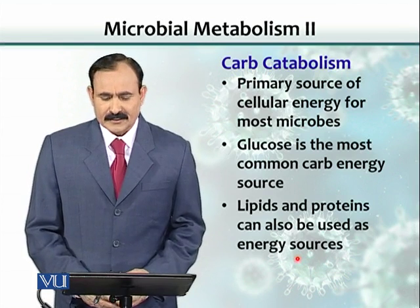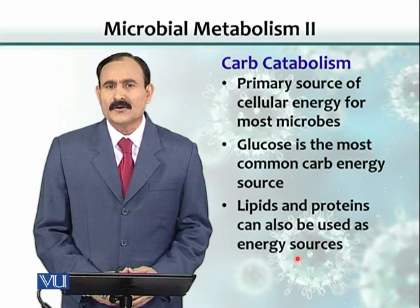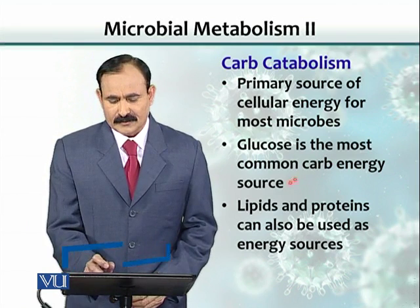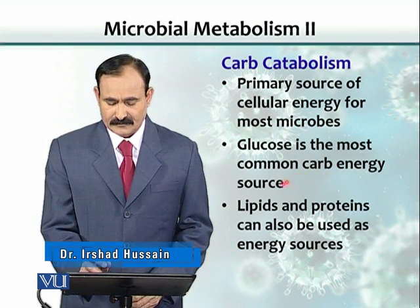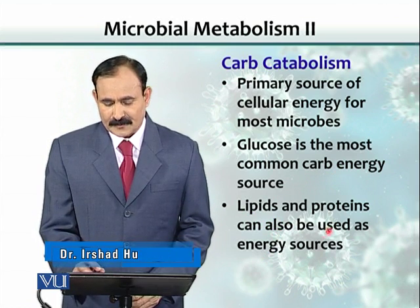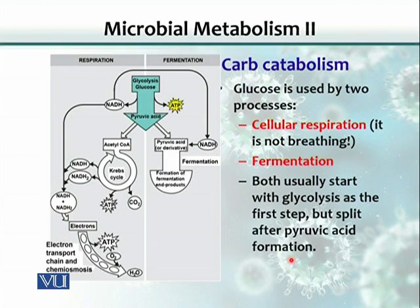Carbohydrates are used as a primary source of nutrients for most bacteria, and glucose is the most commonly used carbohydrate as an energy source. Although sometimes lipids and proteins can also be used as a source of energy by bacteria. This slide shows carbohydrate metabolism. Glucose is used in two-stage processes: one is called cellular respiration, and the other is called fermentation.